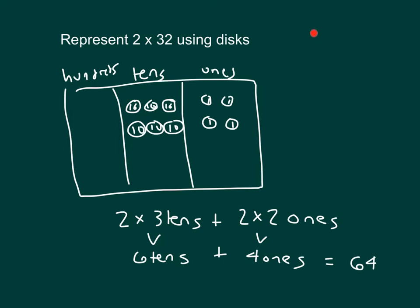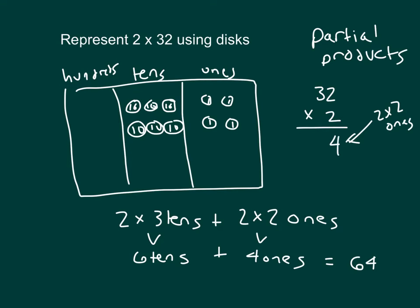That work using a partial products approach would be written as follows. We start with 32. We multiply by two, and we're looking at two times the two ones. Two times two ones does equal four. Next, we have it where we're multiplying two times the three tens. And two times three tens does give us six tens, which is worth 60. I do add those two together using a partial products approach, making sure my digits are nicely lined up. And I get that same answer that I got before using our place value chart and disks of 64.